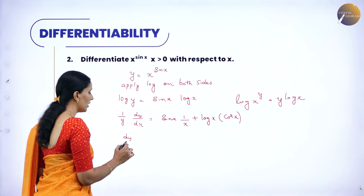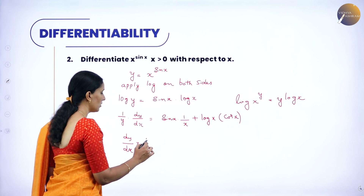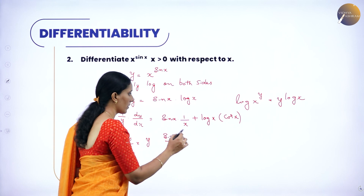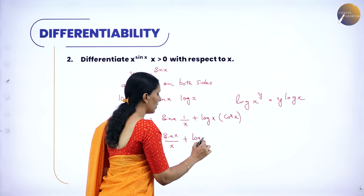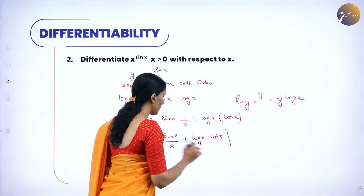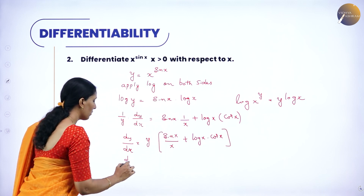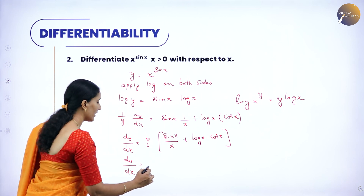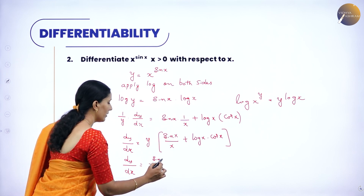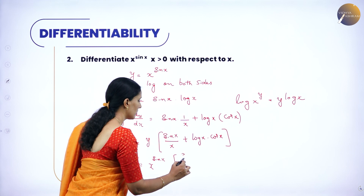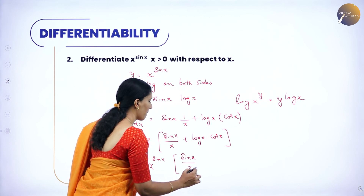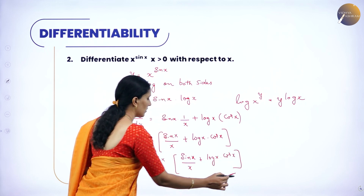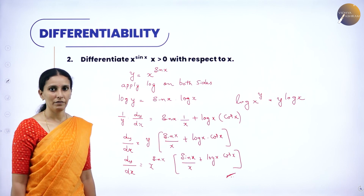So now shifting, we get dy by dx equal to y into (sin x by x plus log x into cos x). Replace y back with x to the power sin x. So dy by dx equals x to the power sin x into (sin x by x plus log x·cos x). This is the derivative of the given function.